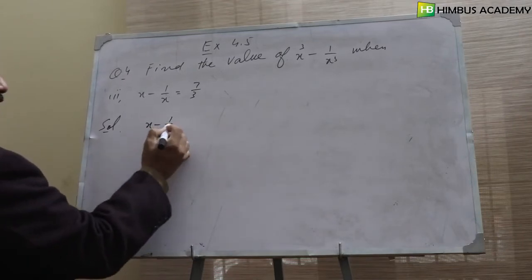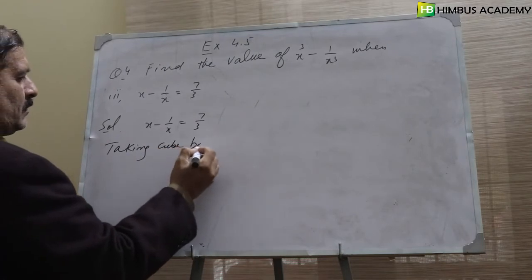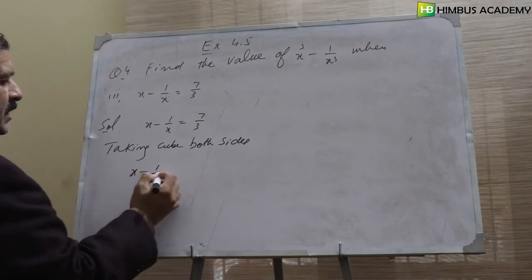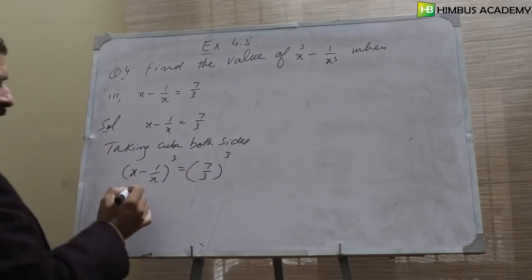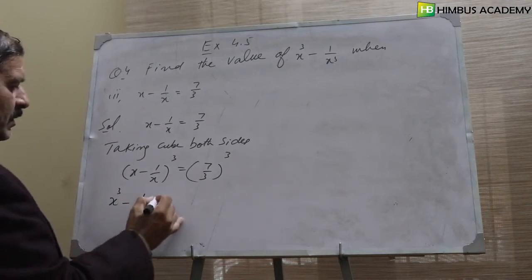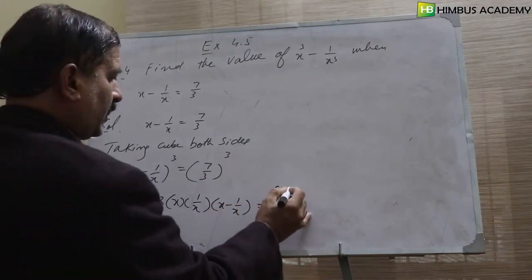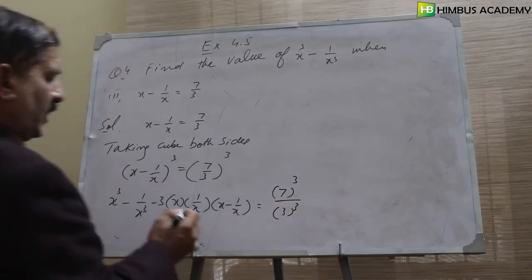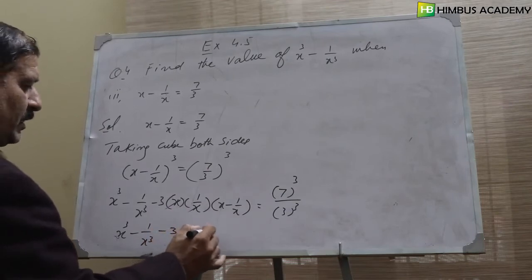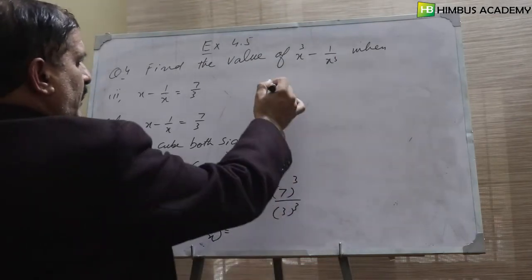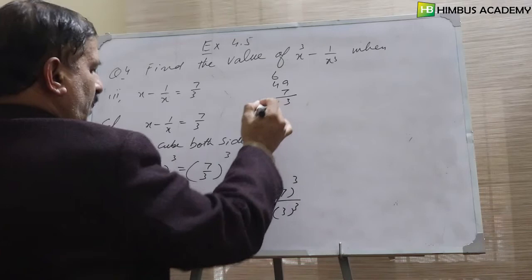Ab iska hum cube lete hain — taking cube both sides. x minus 1 over x whole cube equals 7 over 3 whole cube. Yeh formula hai, expand karte hain: a cube minus b cube minus 3ab into a minus b. And 7 cube: 7 × 49 = 343. x and x cancel, so x cube minus 1 over x cube minus 3 into x minus 1 over x equals 343 over 27.